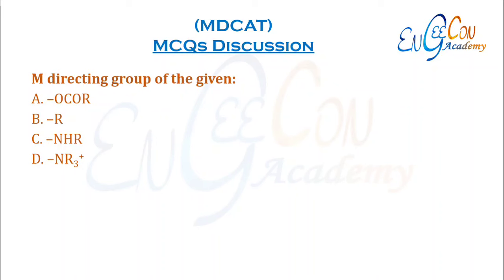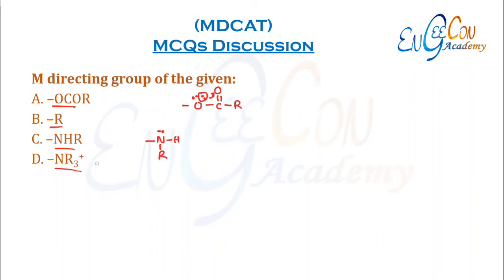Meta-directing group among the following: —O–C=O–OR contains a lone pair on the atom attached to the benzene ring and is a moderate activating group. R is also activating. Nitrogen with a lone pair is a strong activating group. Positively charged groups are deactivating because they withdraw electrons from benzene — these are meta-directing groups.